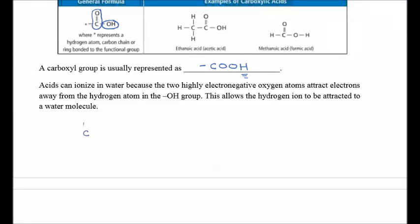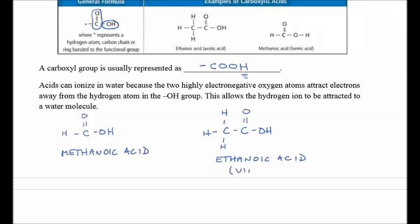If we have one carbon with a double-bonded O and OH, but remember carbon still has to have four bond sites, we call this methanoic acid. If we have two carbons with a double-bonded O and OH, but each carbon still has to have four H's, this would be ethanoic acid. Ethanoic acid is called vinegar.